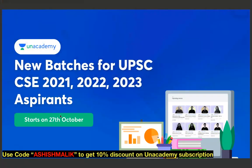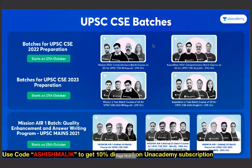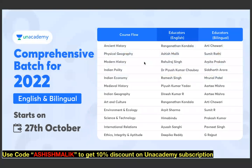I will also be joining Unacademy with new batches starting 27th October. Whether your target year is 2022 or 2023, these batches are for you. All India Ranked 13, Gaurav Bhudaniya, a topper, will also study in these batches. You will get 5 classes along with strategy and answer writing sessions, plus one-to-one interaction opportunities with the topper. Complete syllabus will be covered in English, bilingual, and Hindi medium batches.